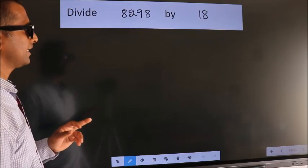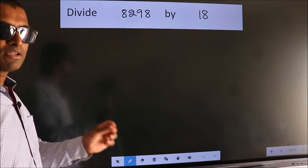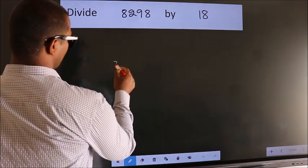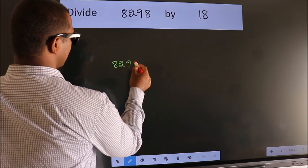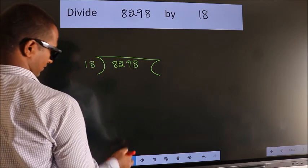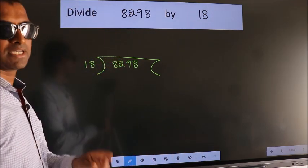Divide 8298 by 18. To do this division, we should frame it in this way: 8298 here, 18 here. This is your step 1.